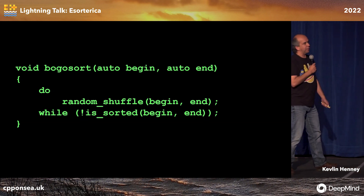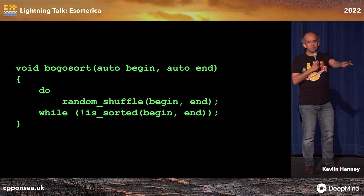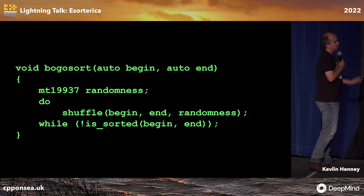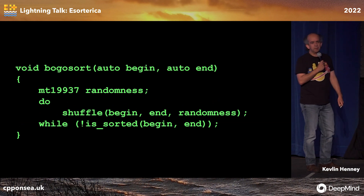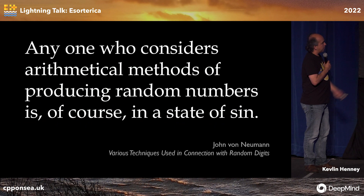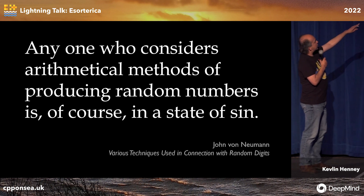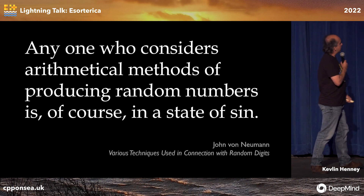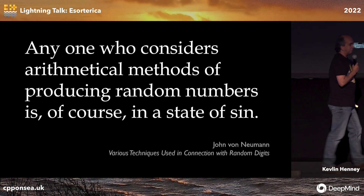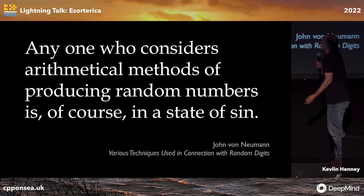They took random shuffle out of the standard for no good reason — I will have a discussion about that later. But that's fine, we can get around that. However, as John von Neumann noted, anyone who considers arithmetical methods of producing random numbers is, of course, in a state of sin. I don't know what's wrong with that — that sounds great to me.